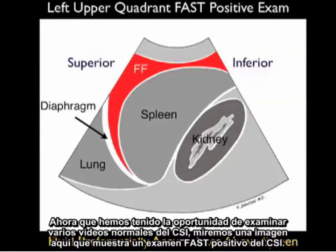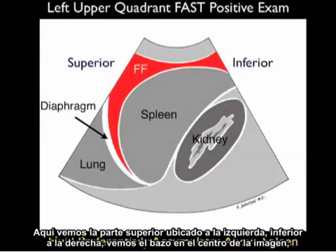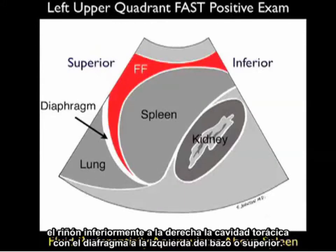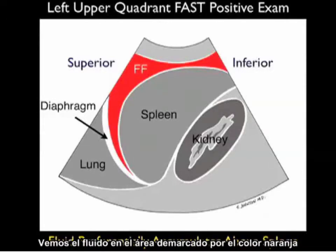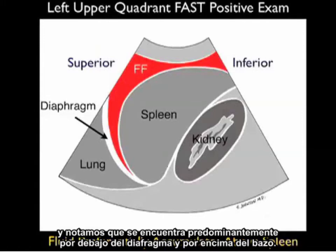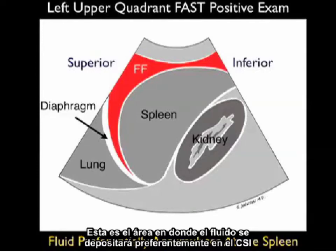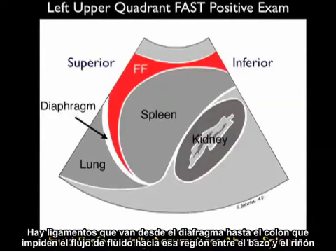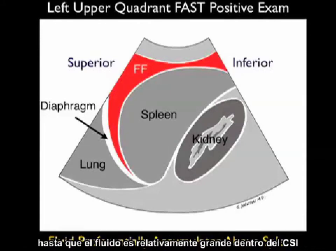Now let's look at a pictorial showing a positive left upper quadrant fast exam. Superior is to the left, inferior to the right; we see the spleen in the middle, the kidney inferiorly to the right, and the thoracic cavity with the diaphragm to the superior left. The area of fresh fluid is demarcated in orange and layers out predominantly below the diaphragm and above the spleen — this is where fluid preferentially deposits in the left upper quadrant. Ligaments sling from the diaphragm to the colon and prevent fluid from flowing into the space between the spleen and kidney until a relatively large volume accumulates.